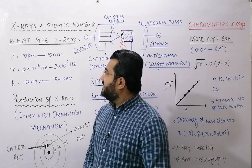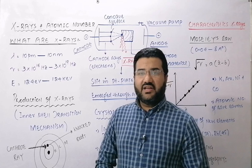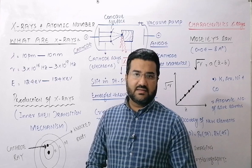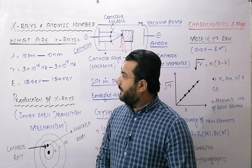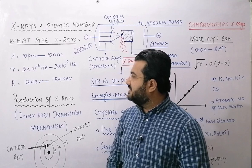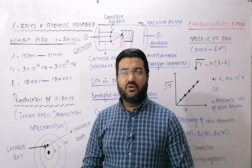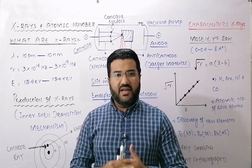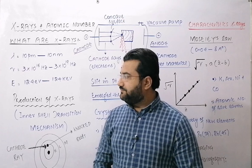X-rays are electromagnetic radiations of high penetration power, with energy greater than ultraviolet radiations and lesser than gamma rays. The wavelength ranges from 10 picometer to 10 nanometer, frequency from 3×10¹⁶ Hz to 3×10¹⁹ Hz, and energy from 124 electron volts to 124 kilo electron volts. X-rays are ionizing radiations — when passed through a gas, they can produce positive ions of that gas.